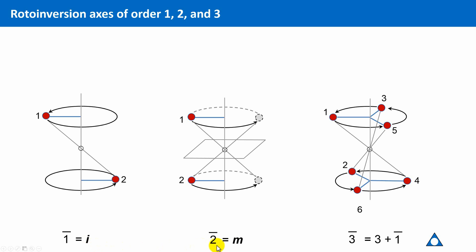because these rotoinversions can also be described as a simple center of inversion for the order of 1, and a rotoinversion of the order 2 is simply identical with a simple mirroring. So, they do not constitute a new symmetry element on their own.